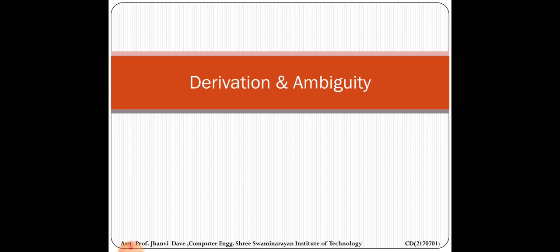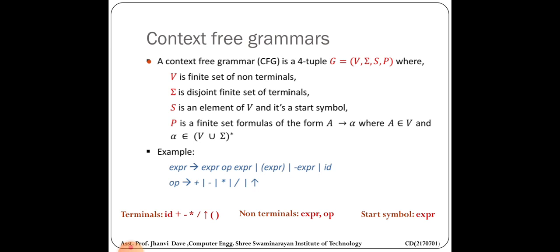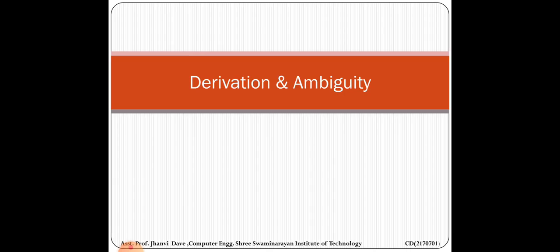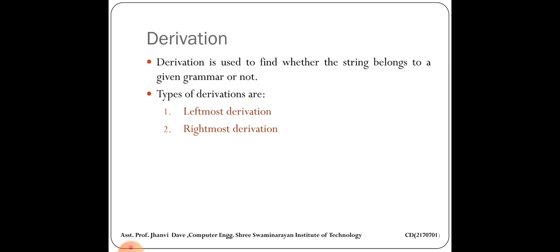After that comes derivation and ambiguity. Context-free grammar, which we saw in theory of computation, can be represented in two forms: first is derivation tree, and second is sentential form. Derivation is used to find whether a string belongs to a given grammar or not. There are two types of derivation: leftmost derivation and rightmost derivation.